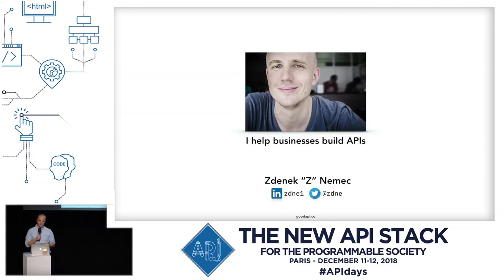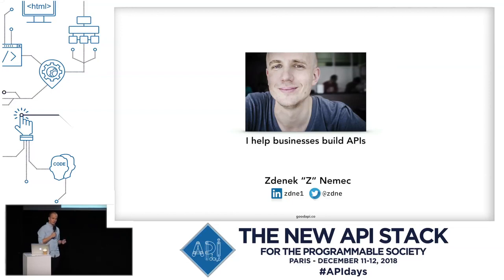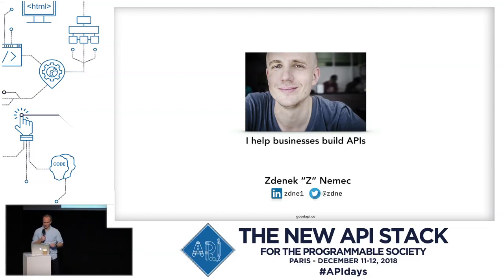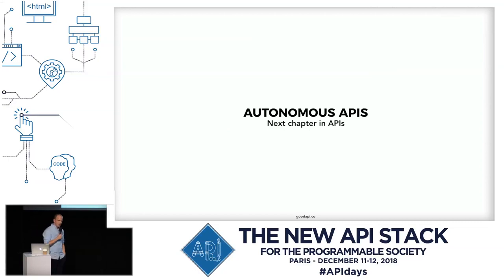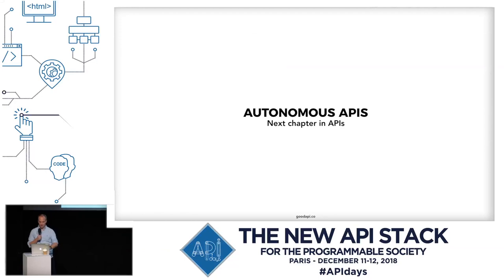So far, I've been really lucky to work with some of the most interesting companies out there. We also create tools to help ourselves in what we are doing. There is one for data modeling — if you are using JSON schema, I recommend you go check out supermodel.io. But today, I would like to talk about autonomous APIs, which I think is the next chapter in APIs.